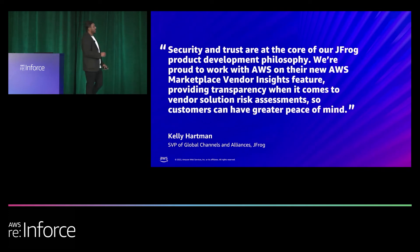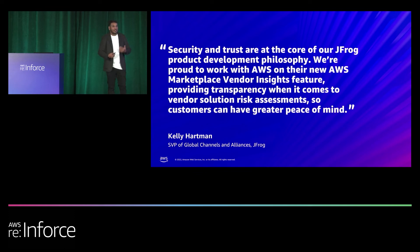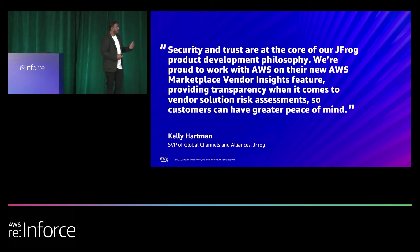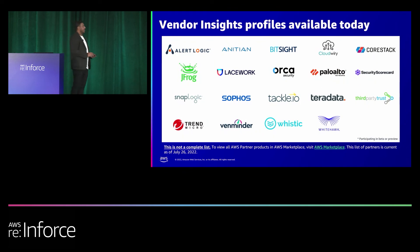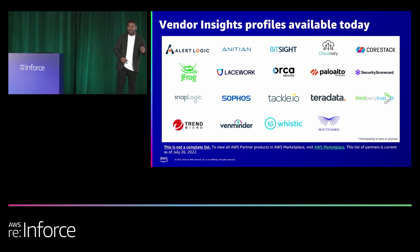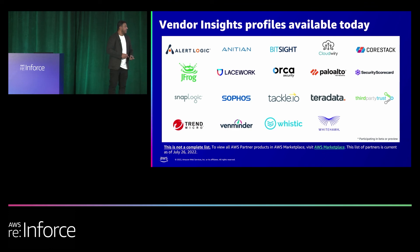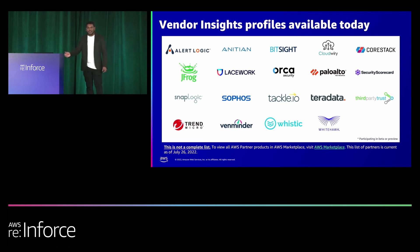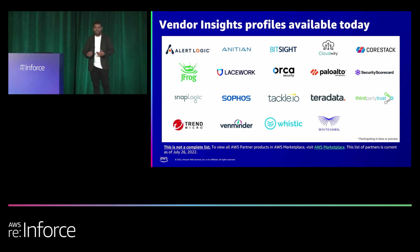We have a great quote from JFrog, representing a sentiment shared by many of our launch partners — they've made a lot of investment ensuring the security of their product is strong, and they want to use that to showcase and differentiate their product. With Vendor Insights, it's much easier for them to provide that transparency. In this preview launch, these great partners have already created profiles. You can go to AWS Marketplace now, discover their profiles, and request access to their dashboard. We have one of our key launch partners, Trend Micro, with us here — Brian and his team were instrumental in helping us design this solution.